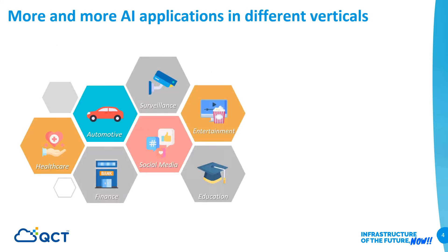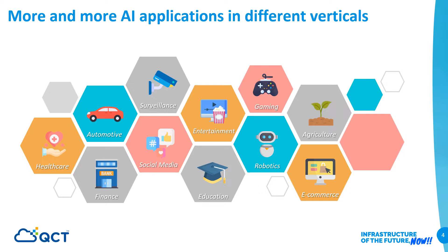Based on these facts, we can see more and more AI applications used in different verticals. For example, in healthcare, medical image recognition uses AI training and inference models for better efficiency, and AI helps doctors in decision-making and research. In automotive, AI works like magic — for example, autonomous cars use machine learning and computer vision to safely navigate through traffic. Beyond these, we also see AI in video surveillance, social media, entertainment, education, and other areas.